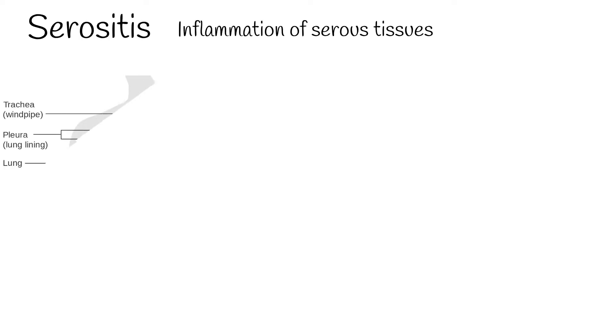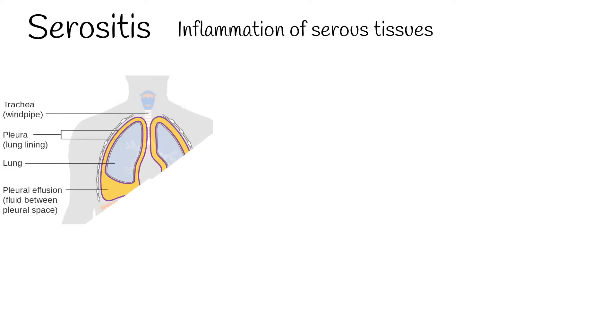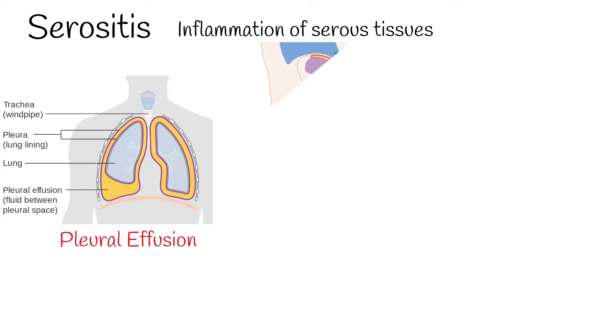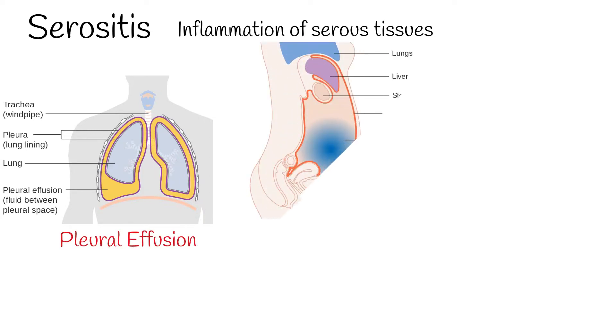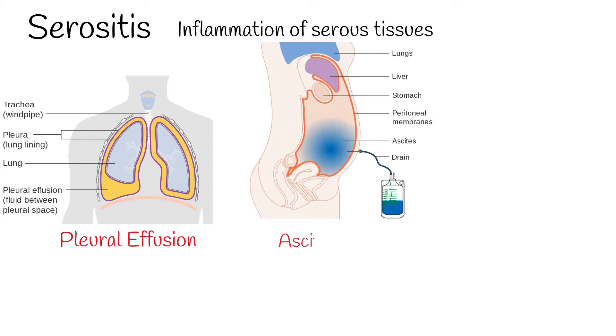Serositis is the inflammation of serous tissues in the body. The most affected parts are the lung lining tissue called pleura, abdominal inner lining tissue called peritoneum, and the heart pericardium.